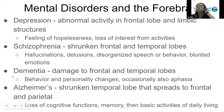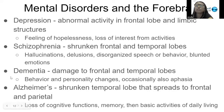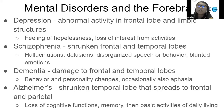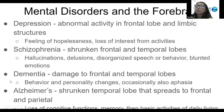Next, dementia is also due to damage to the frontal and temporal lobes. Symptoms include behavior and personality changes, and occasionally aphasia. Finally, Alzheimer's is due to a shrunken temporal lobe that spreads to the frontal and parietal lobes, causing symptoms of loss of cognitive functions, memory, and eventually loss of basic activities of daily living once it gets really serious.